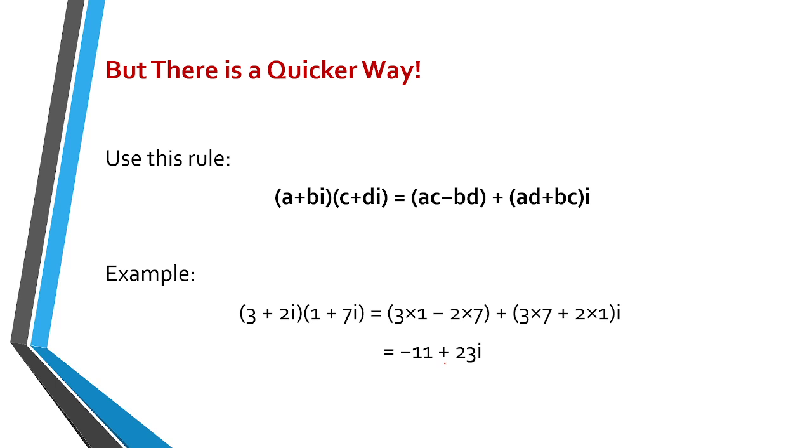But there is a quicker way when we multiply complex numbers. We use this rule: (a+bi) times (c+di) equals (ac - bd) plus (ad + bc)i. So this is just multiplication of binomials with the imaginary number. Example: 3+2i times 1+7i, using this method, we get equal to -11 plus 23i.